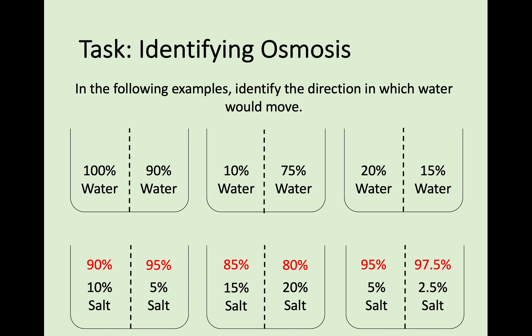Always be very careful about what the question is asking you. For osmosis or diffusion you're always looking at high concentration to low concentration, but if they give you anything other than a water percentage and ask you to identify osmosis, you need to first work out what the water concentration is.